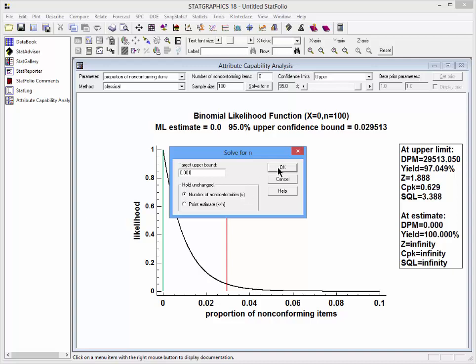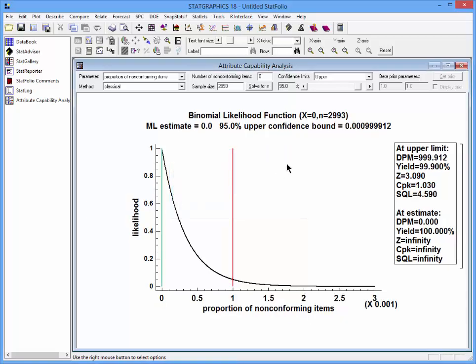If I now press OK, it'll tell me that I should take a sample of 2,993 items. In that case, the 95% upper confidence bound, assuming again zero non-conformities, will be just under 0.001.